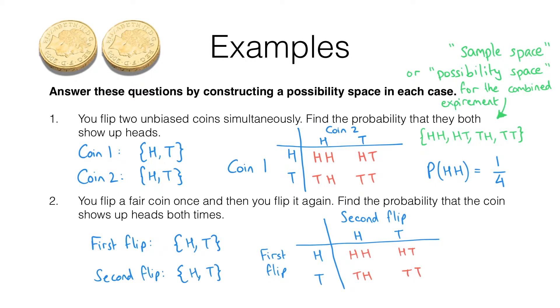So we're going to get exactly the same sample space diagram for the combined experiment as we had in question one. This means that the probability that the coin shows up heads both times is again one quarter — one outcome where the coin shows heads both times out of four possible outcomes.